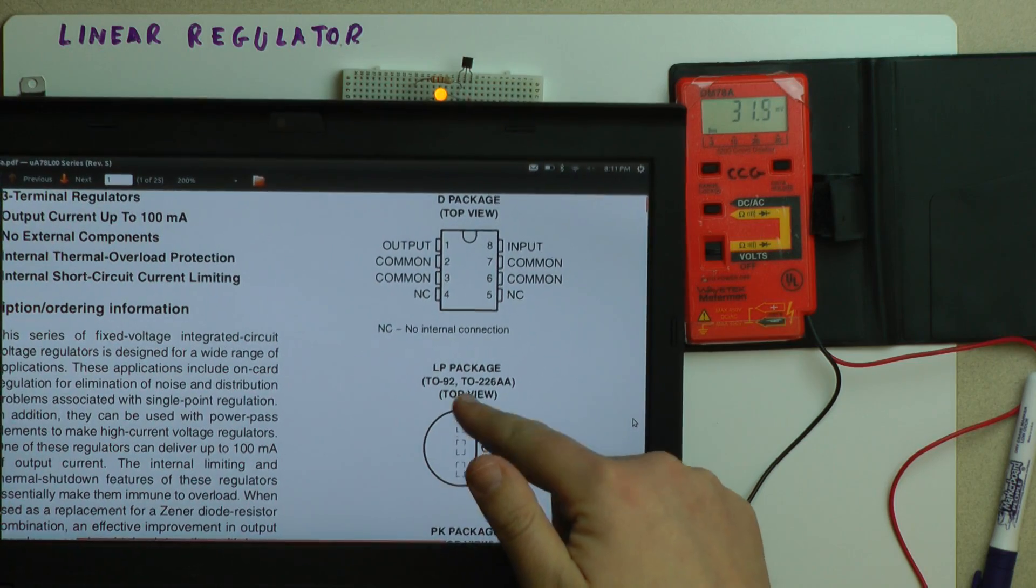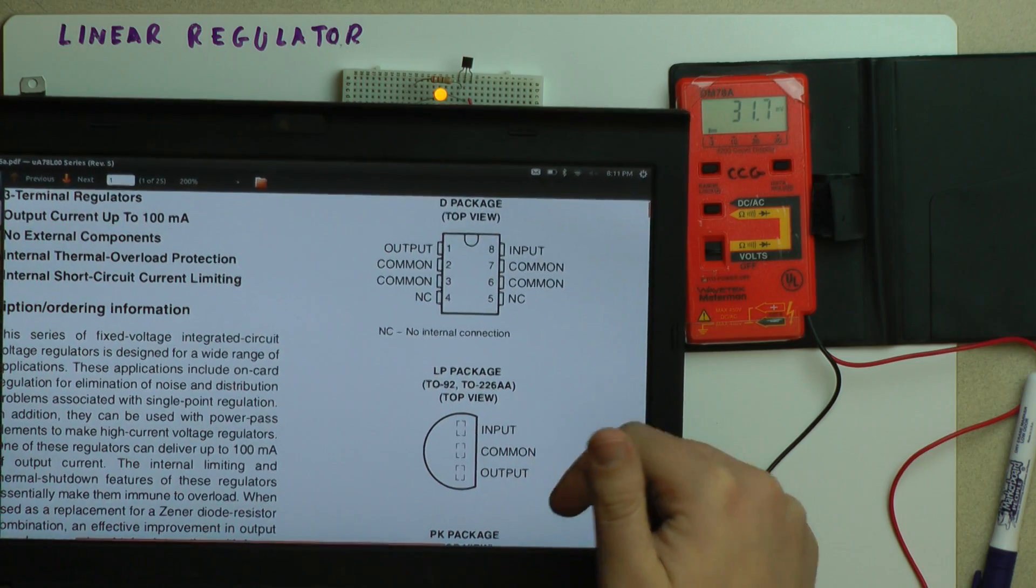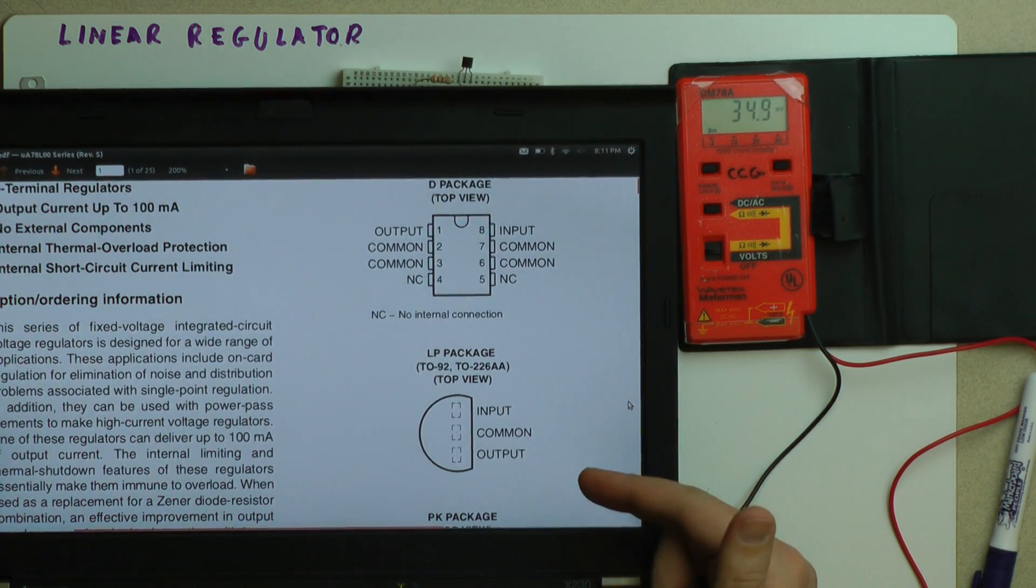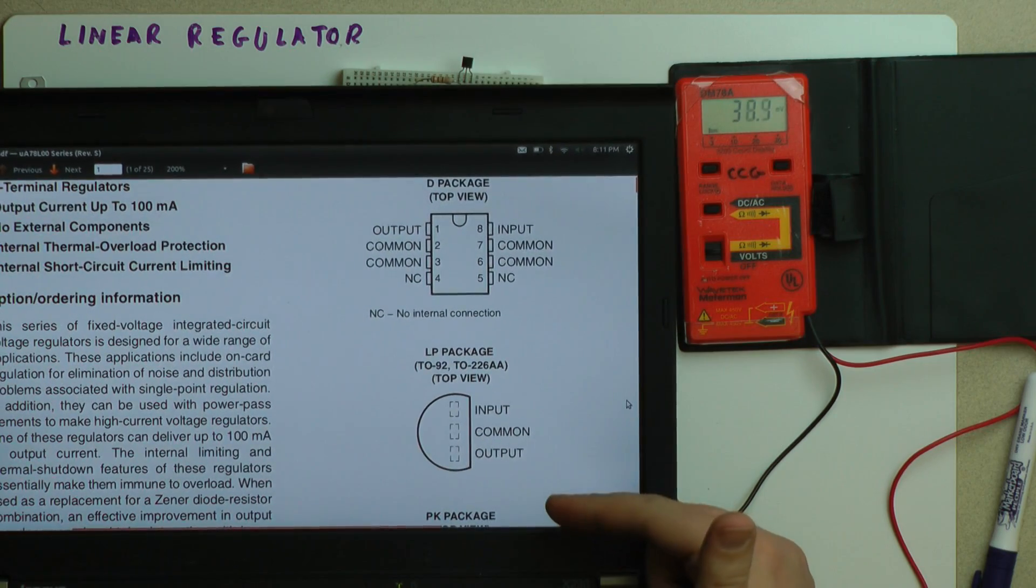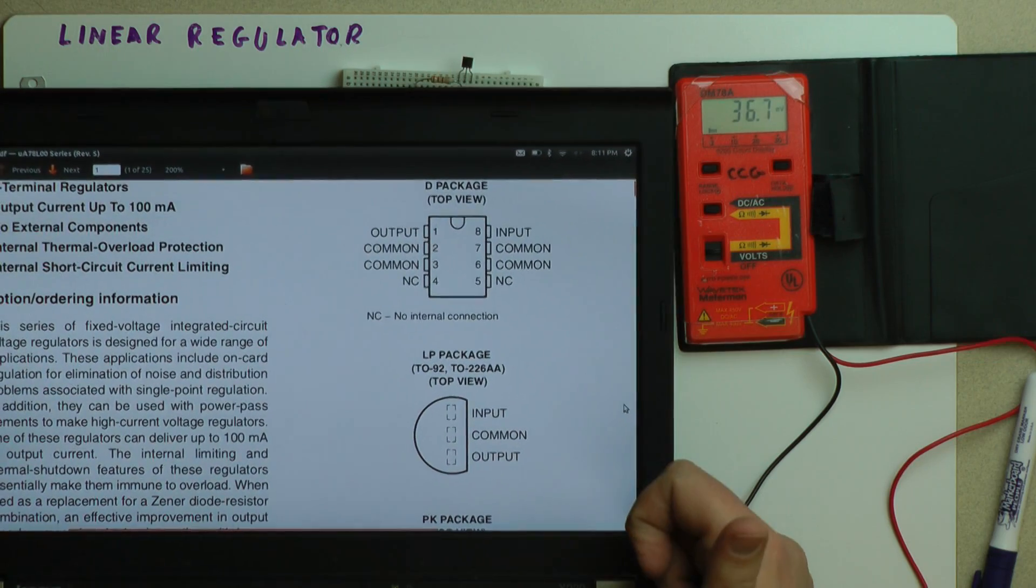So it looks like a transistor package. It's a circle and a flat spot on it, and the top line is input. The middle line is common, where you're going to hook your negative line or your battery to. The output is where you're going to get your positive side for your output. So my 5 volts between my output and my common.